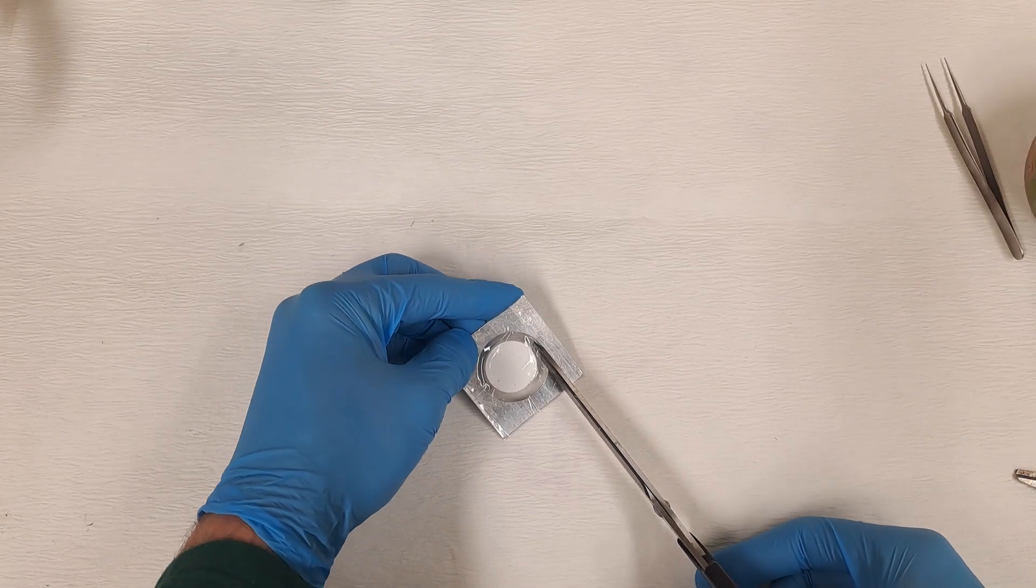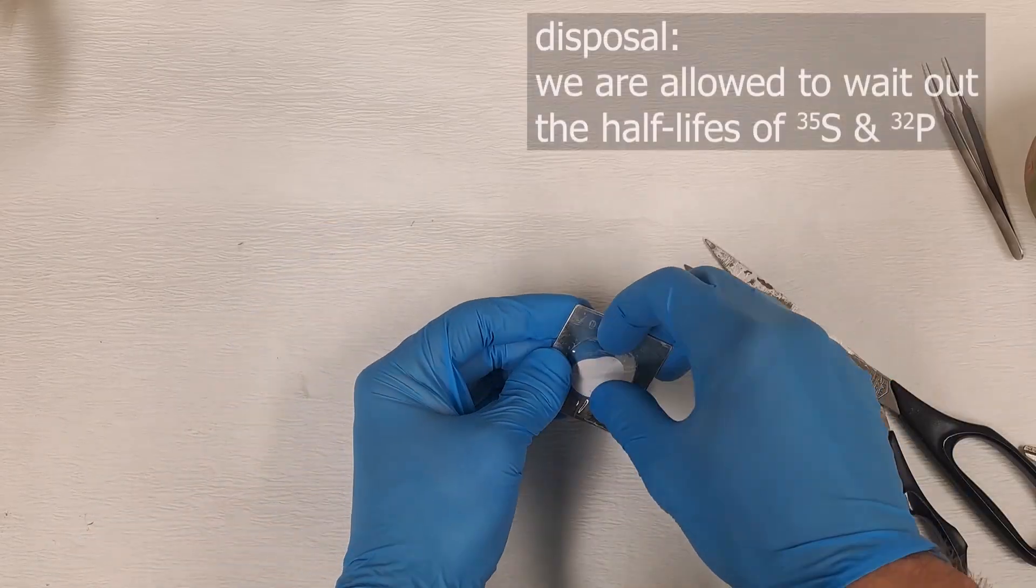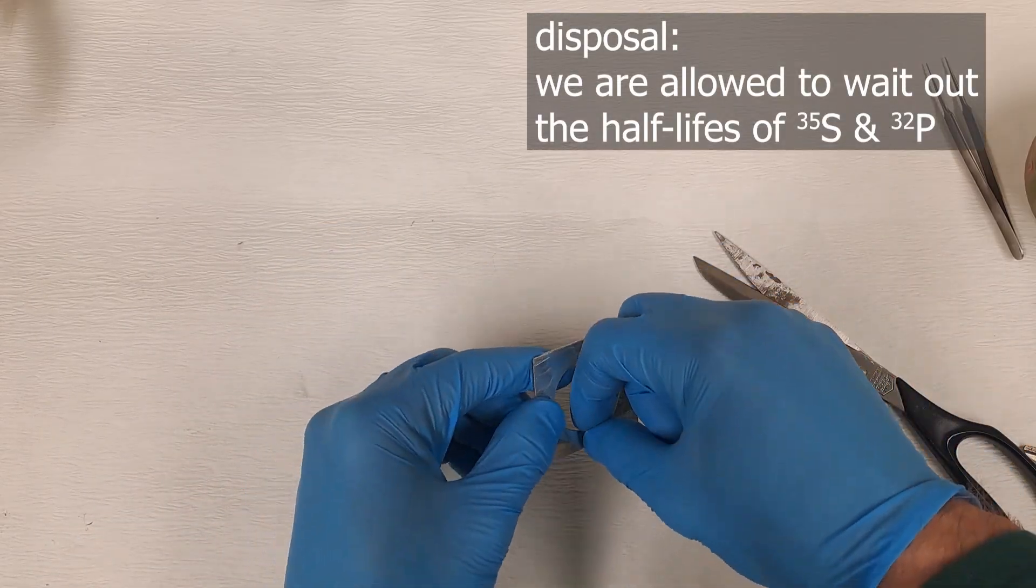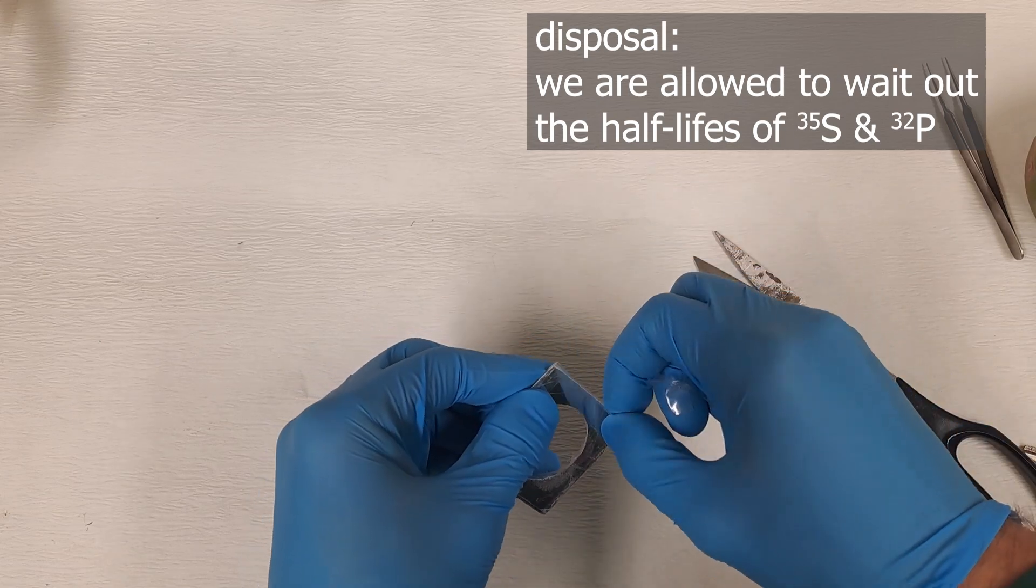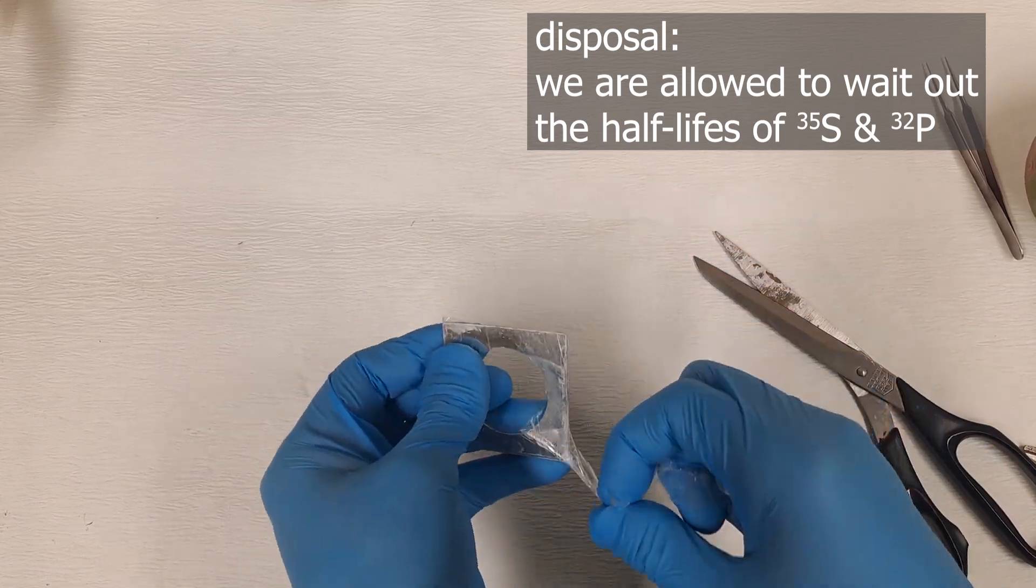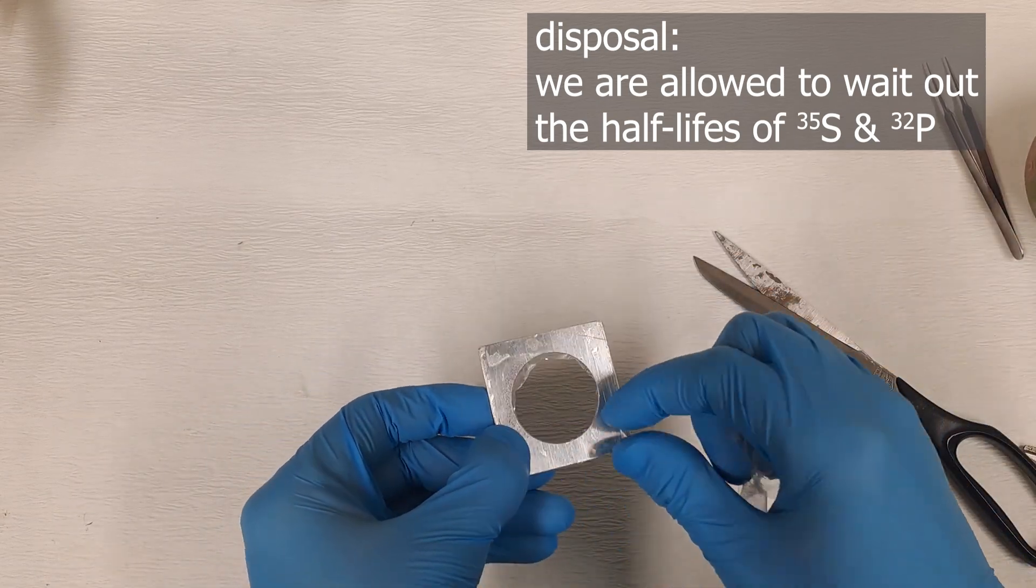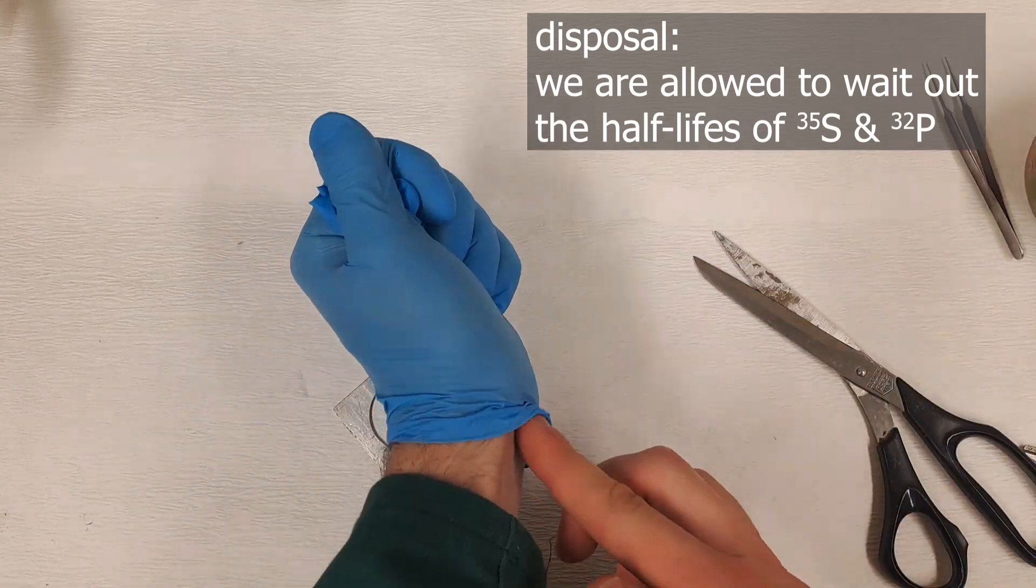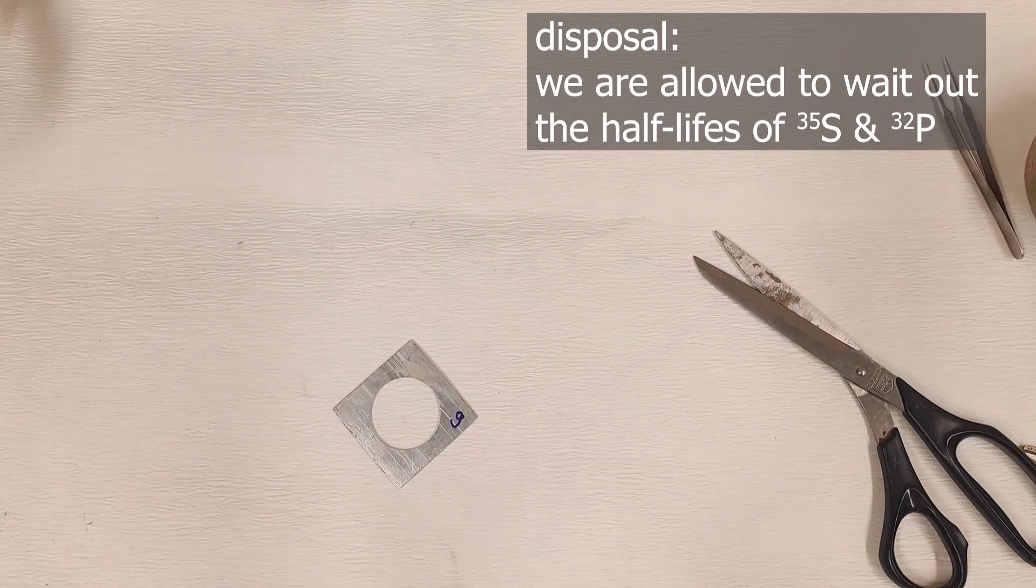Regarding the waste management, fortunately, the disposal is quite straightforward for us because of this 90-day half-life of sulfur-35, meaning we can simply wait it out. We just need to label the container with the date and store it for the next three years and then there will be no remaining activity. We have a license to do that, and also for phosphorus-32.